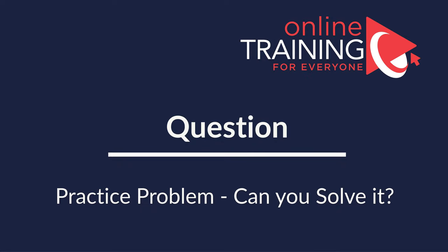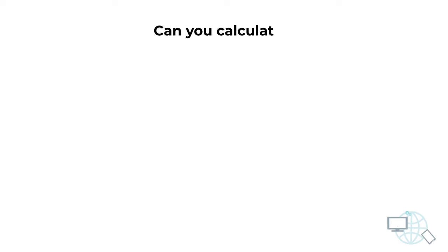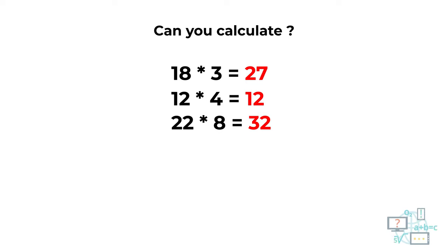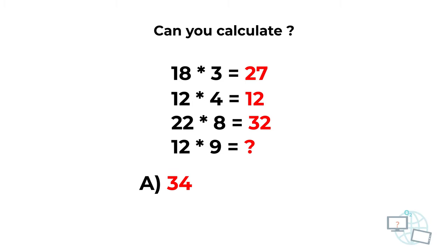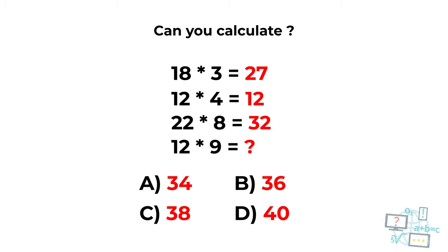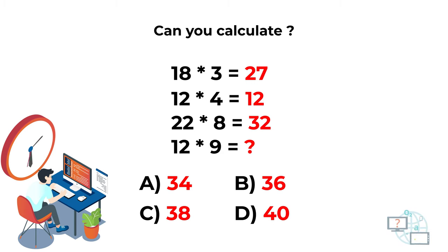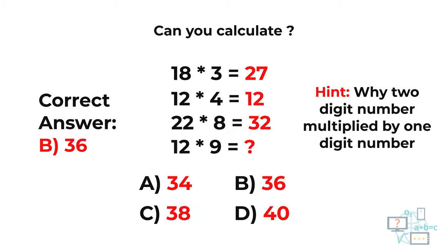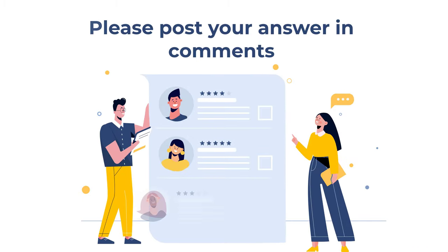Here's a practice question. You're presented with three full expressions: 18 × 3 = 27; 12 × 4 = 12; 22 × 8 = 32. You need to calculate the result of 12 × 9 using the same pattern. Choices: choice A, 34; choice B, 36; choice C, 38; choice D, 40. Hint: notice why each expression is a two-digit number multiplied by a one-digit number. The correct answer is choice B, 36.